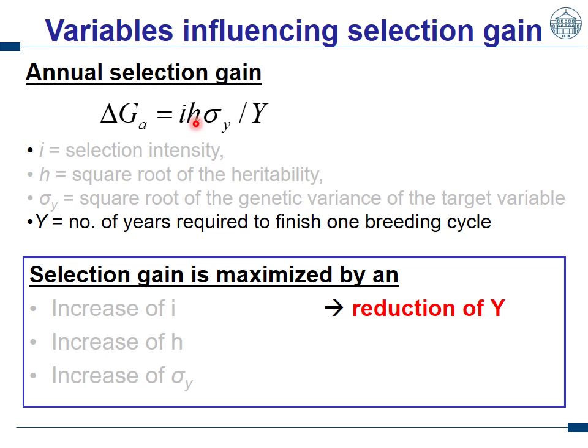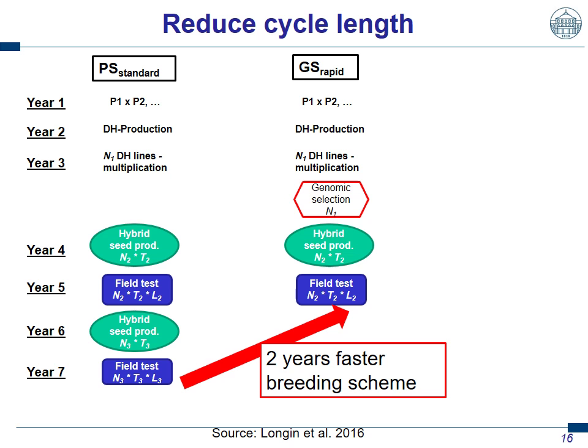We have looked at selection intensity and heritability and how they can impact selection gain. Let's look at the years required to finish one breeding cycle. To increase the selection gain, it would be desirable to reduce the number of years to finish the cycle. As an example, let's assume hybrid breeding in wheat with a phenotypic scheme: we produce the DH lines, make hybrid seed production, put them in a field test, select the better ones, make hybrid seed production with new testers, and do a second yield test.